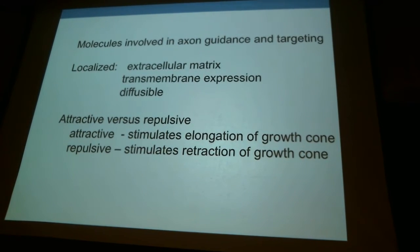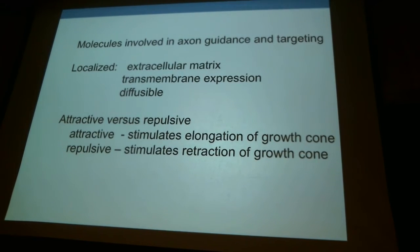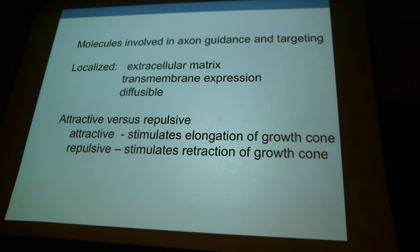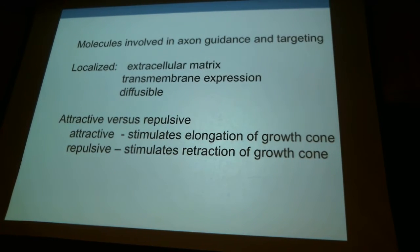The molecules used in axon guidance have several different characteristics. A number are highly localized — either in the extracellular matrix or anchored in support cells. Some are transmembrane-expressed, not attached to membranes per se but in the extracellular matrix; these are expressed in membranes of other cells, either partner neurons or support cells. There's also a class that's diffusable — they're in the extracellular medium and float around, whereas matrix proteins tend to be anchored. They can be attractive versus repulsive, going through second messenger pathways that cause growth cones to either collapse or continue to expand.